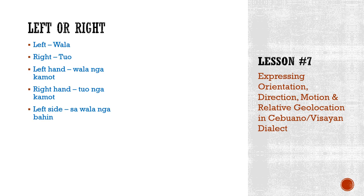Left side: sa wala nga bahin. Right side: sa tu'o nga bahin. If you notice, nga bahin points to a division or a location. Bahin simply means that portion, that side, or that section.